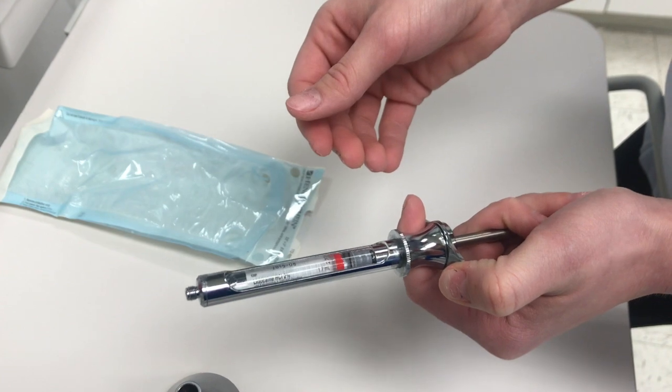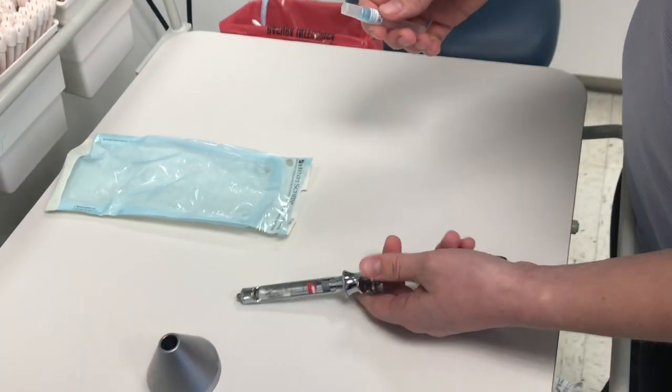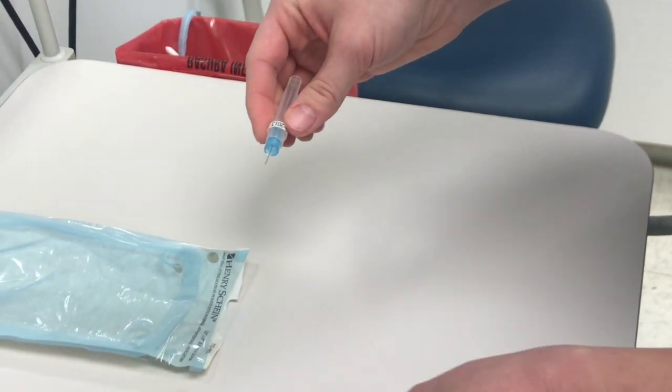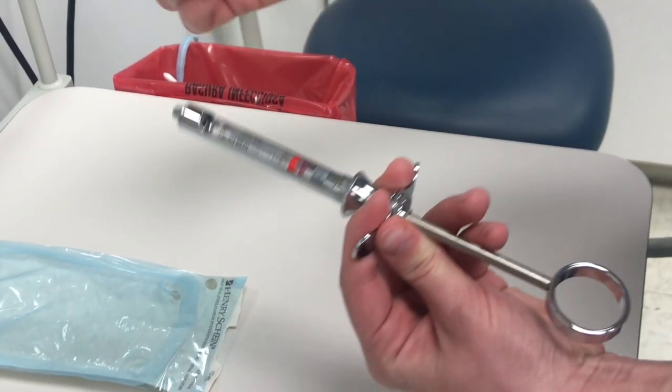When the cartridge is in place, push the piston rod into the rubber stopper. Remove the protective plastic cap from the needle, screw and press the needle into the syringe.